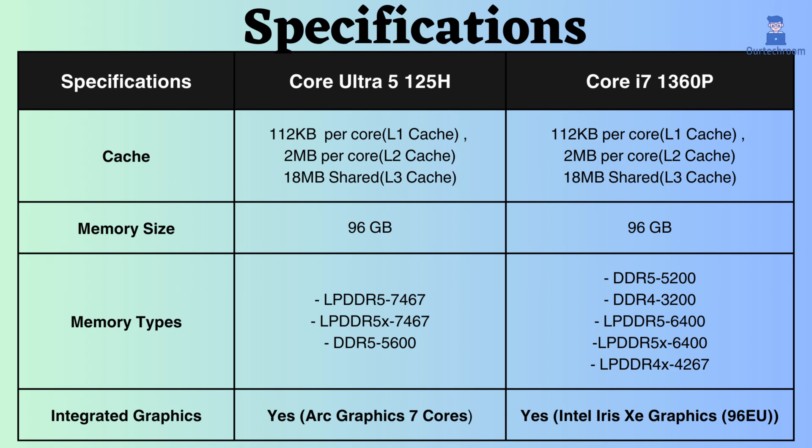Both support memory sizes up to 96GB and both support DDR5 and LPDDR5 memory types, but the memory frequency for these RAM types is higher in the Core Ultra 125H.